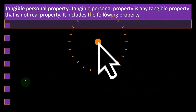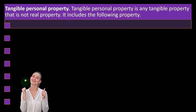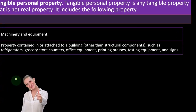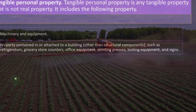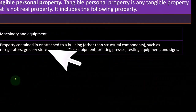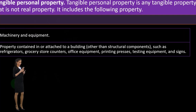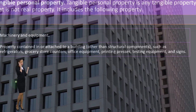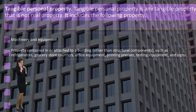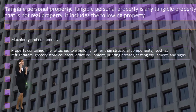Tangible personal property is any tangible property that is not real property. It includes machinery and equipment — that would be one of the more common examples. It also includes property contained in or attached to a building other than structural components. These areas get a little confusing because if you have something that's going to be part of the building itself, you have a much longer depreciation period for buildings and improvements than for other types of things such as equipment.